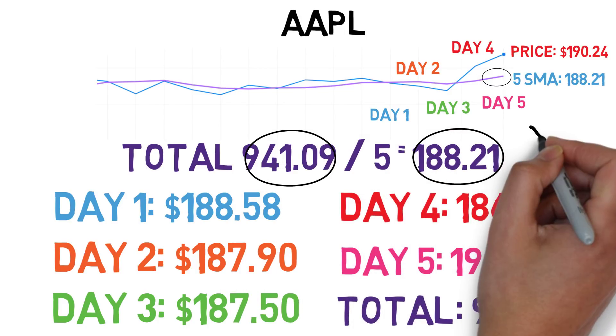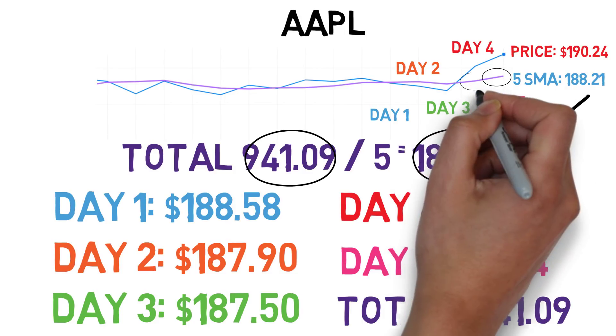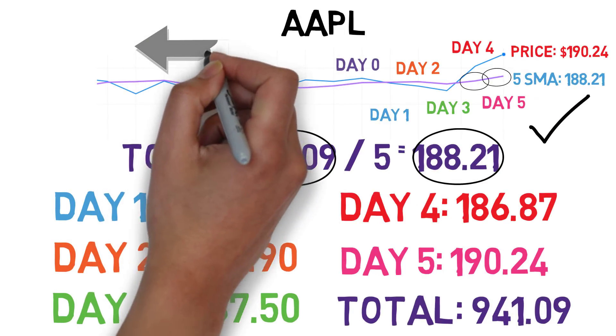According to this chart, we found the correct number. To get the previous day's moving average number, we just move one day earlier. It's as simple as that.